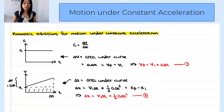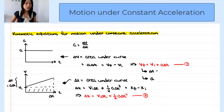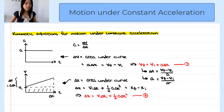Now to derive the third and fourth kinematic equations, we are going to take equation 1 and isolate for delta t and for the acceleration, then substitute them separately into equation 2. So delta t from equation 1 equals final velocity minus initial velocity over the acceleration. And if we isolate for the acceleration, we get acceleration equals final velocity minus initial velocity over delta t.